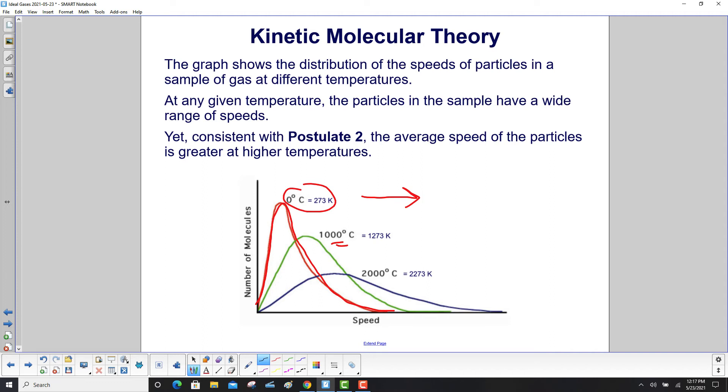At any given temperature, the particles in the sample have a wide range of speeds. Yet, consistent with postulate 2, the average speed of the particles is greater at higher temperatures.